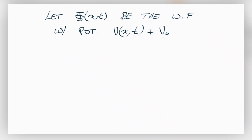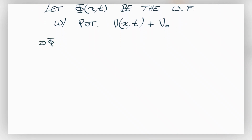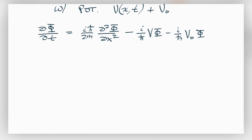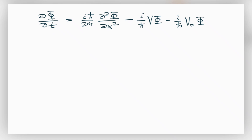In that case, we rewrite the Schrödinger equation: dφ/dt is equal to ih-bar over 2m times d²φ/dx² minus i over h-bar. We expand it out to have V(x,t) times φ, and then we also have minus i over h-bar times V₀ times φ. At this point we can move things around, and we need a little bit of knowledge of differential equations in order to solve this.